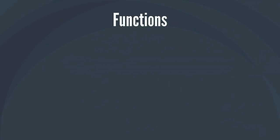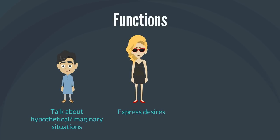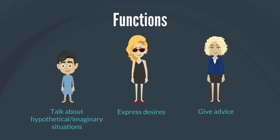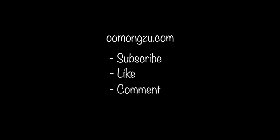To summarise, we use the second conditional to talk about hypothetical or imaginary situations in the present or future and their consequences, and to express desires. If you've enjoyed our video, please visit our website at umonzu.com for more videos, and subscribe to our YouTube channel. Like, comment and share our videos, and make sure you tell your friends and colleagues about umonzu. Thank you. Bye.